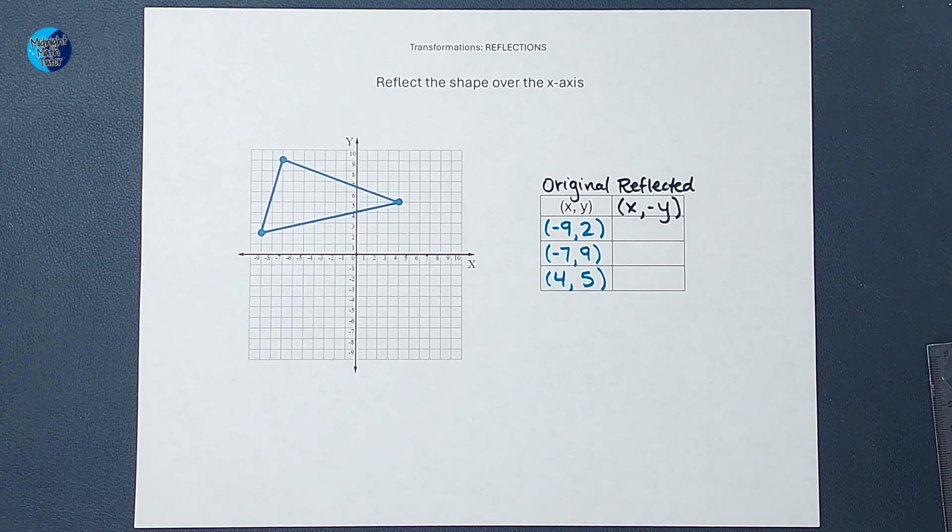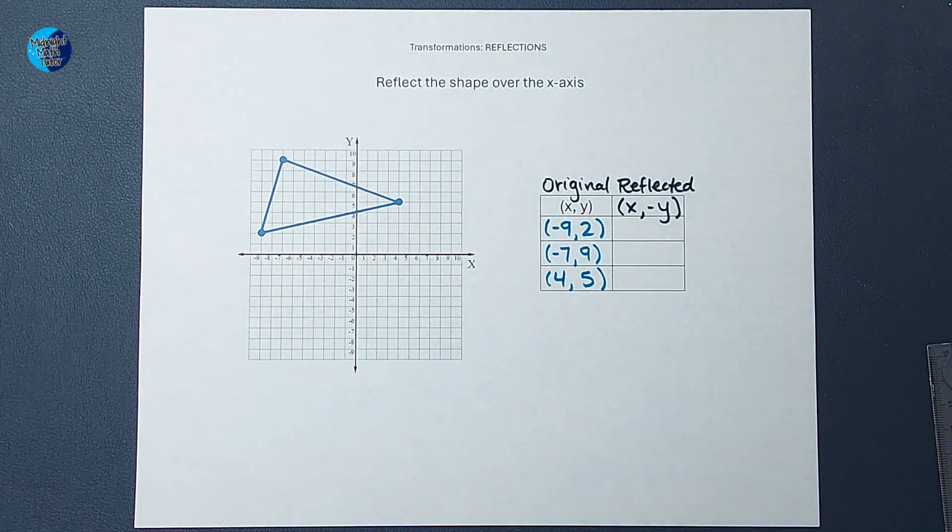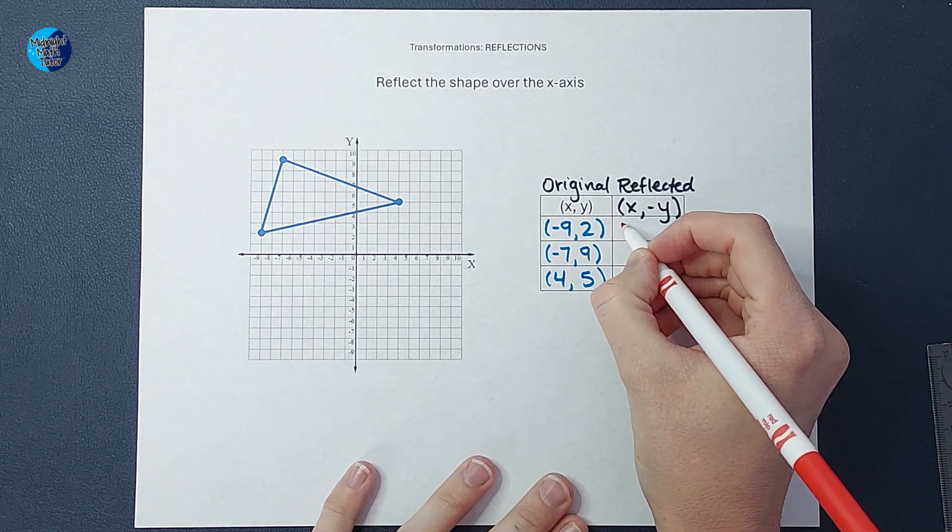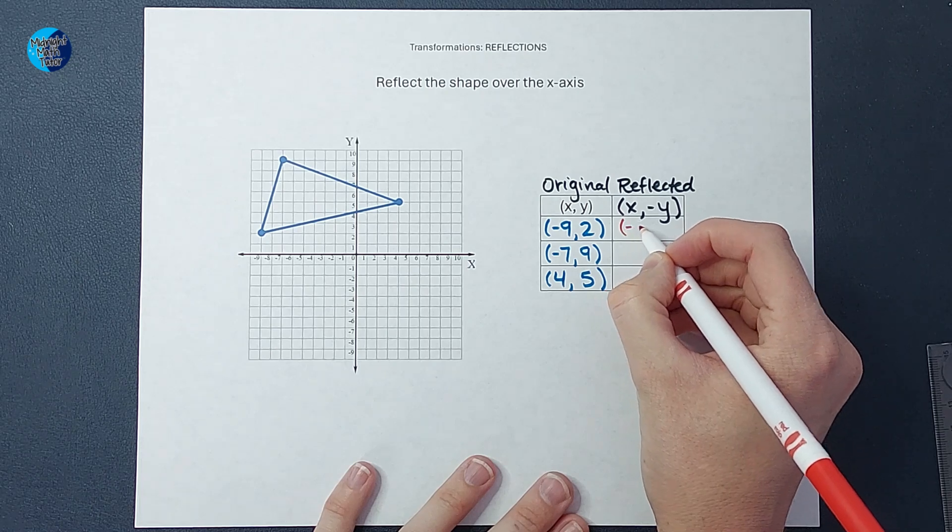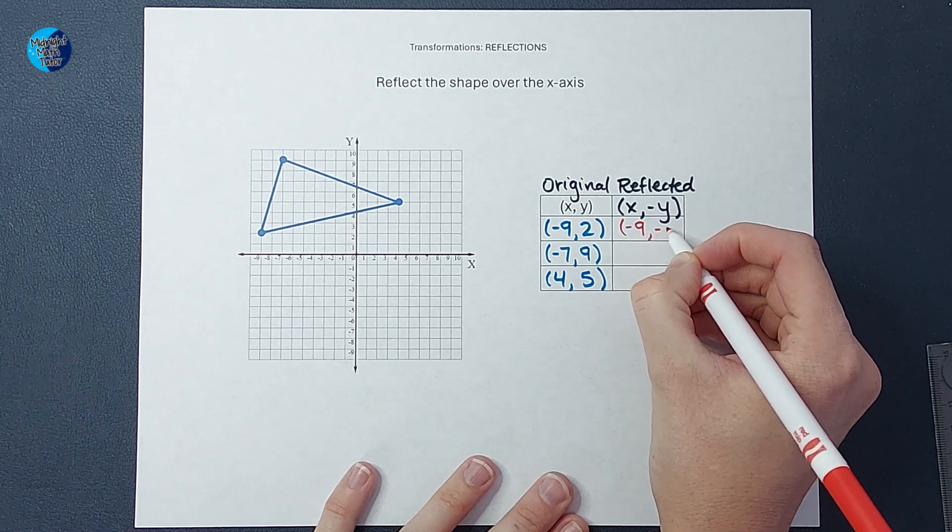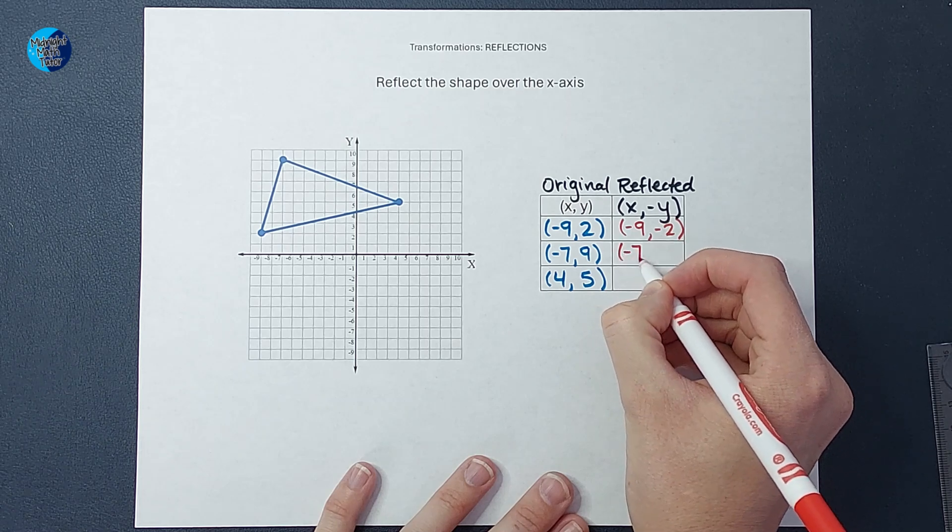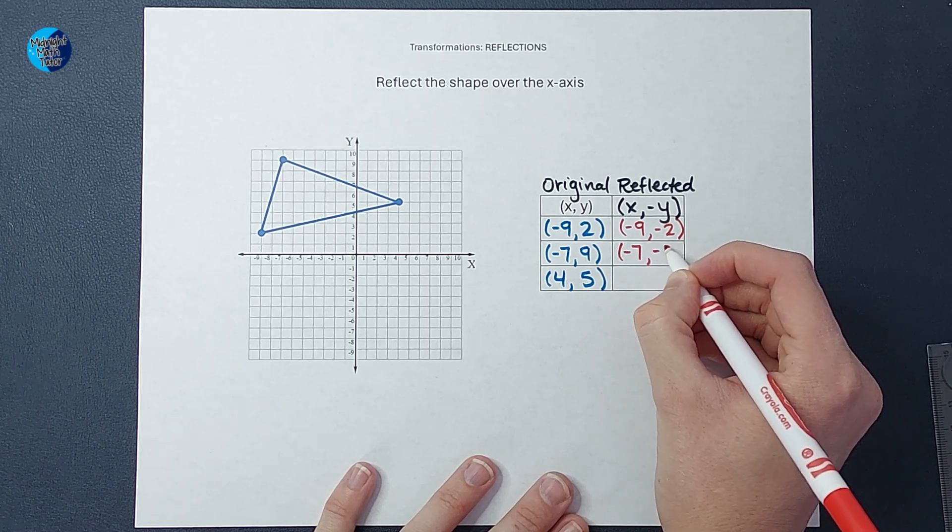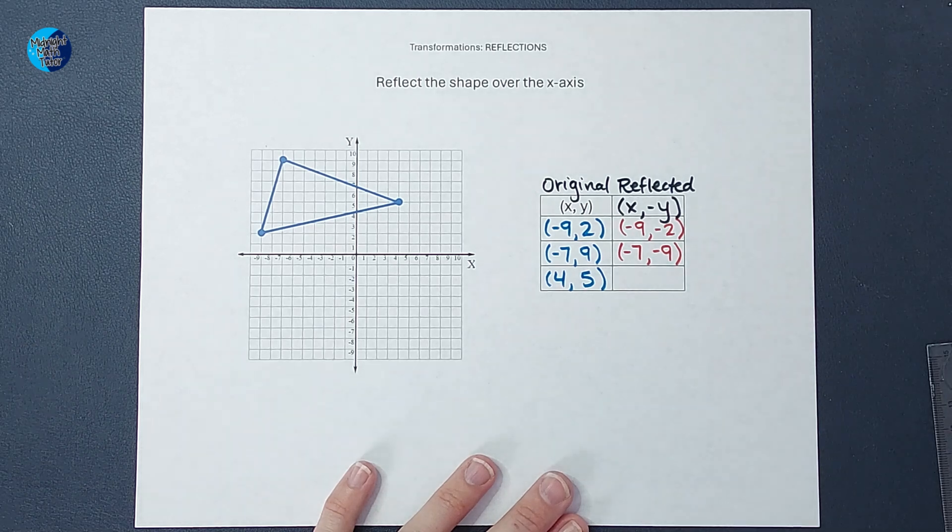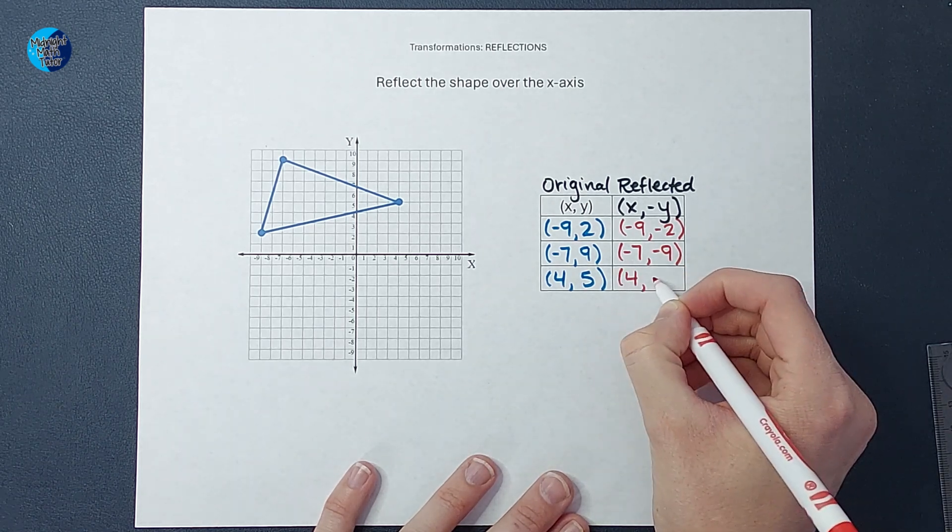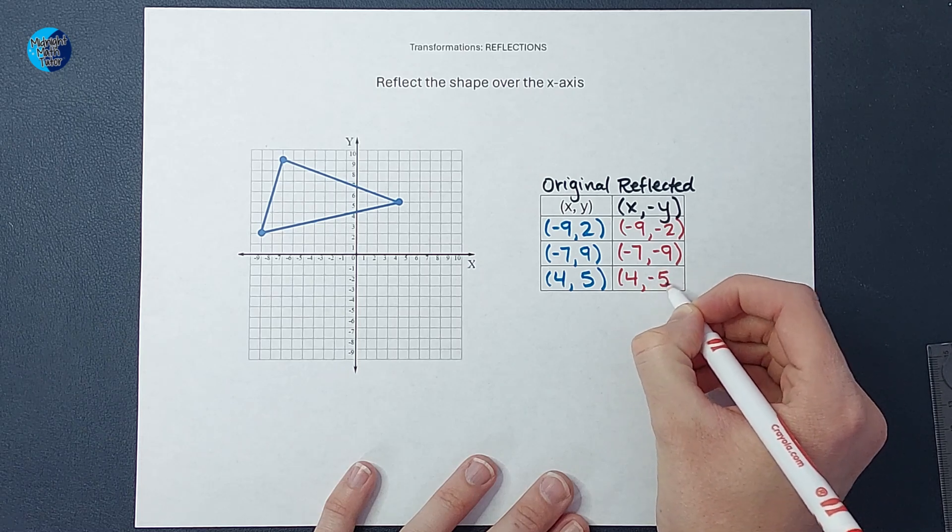Now all I need to do to reflect this shape is change the y sign. So instead of having (-9, 2), I'm going to have (-9, -2). Then I'm going to have (-7, -9). I'm going to have 4 stay the same and then -5.